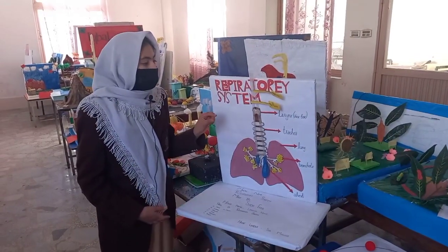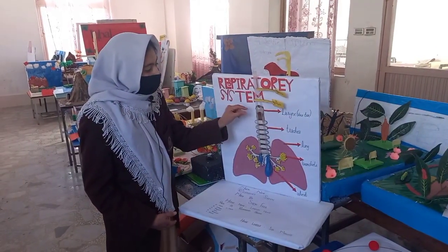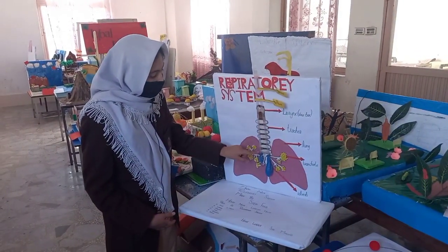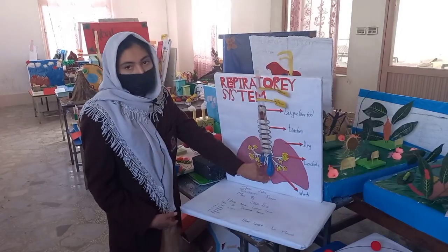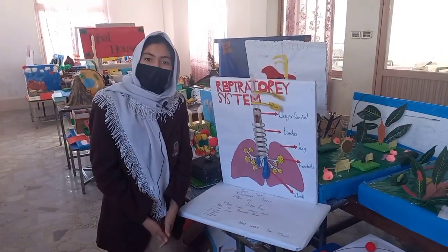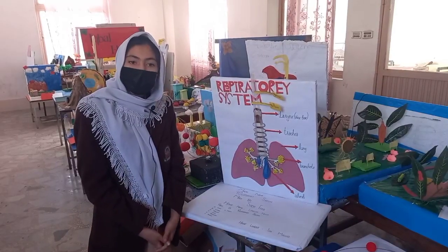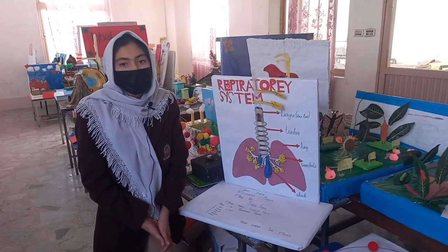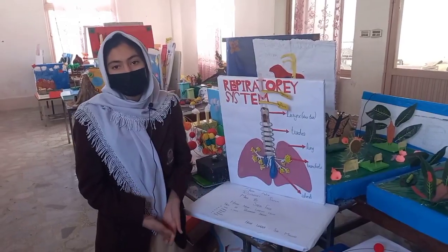The respiratory system consists of two components: air passageway and lungs. Air passageway is the way where air enters and travels. The air passageway includes the nose, pharynx, larynx, trachea, bronchi, bronchioles, and alveoli. The other component is the lungs. I am so thankful to Avicina Model School and College for giving me an opportunity to participate in the science exhibition.